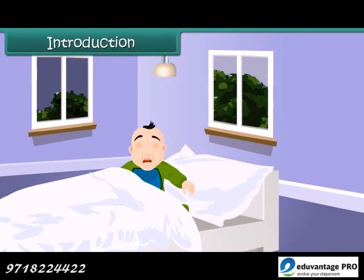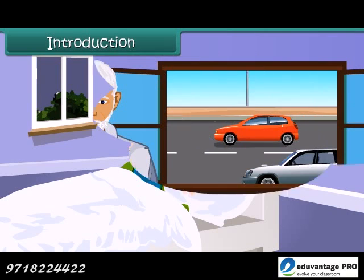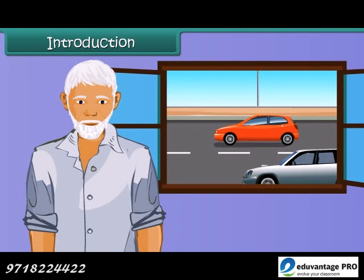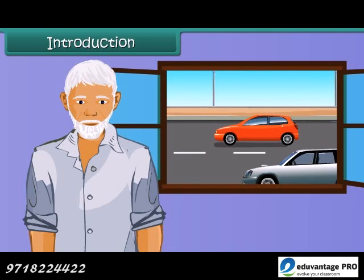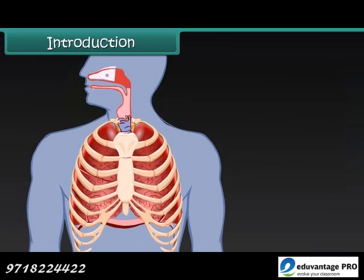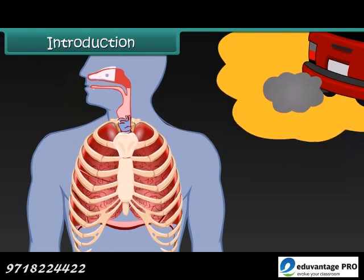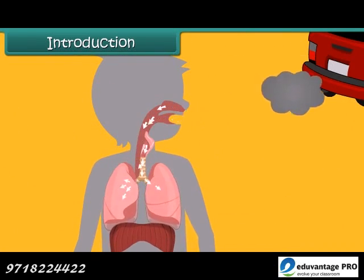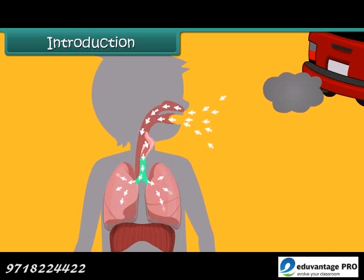The little girl is crying. She is finding it difficult to breathe. See this old man. He lives in the busy area of a city. He is suffering from lung disease. Air pollution is the root cause for their sickness.